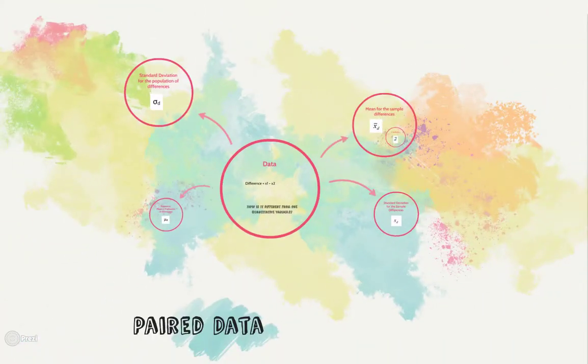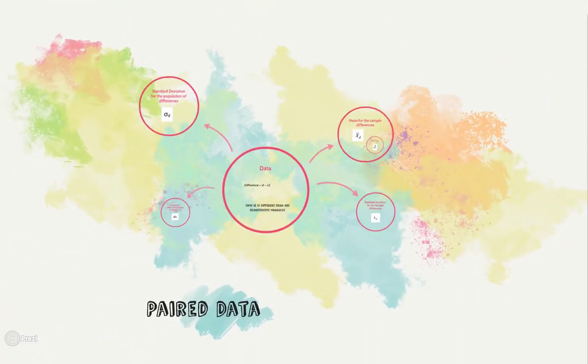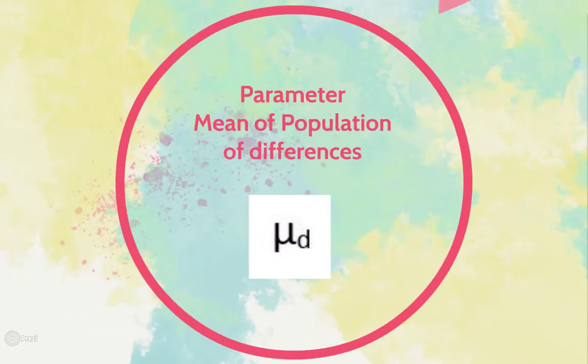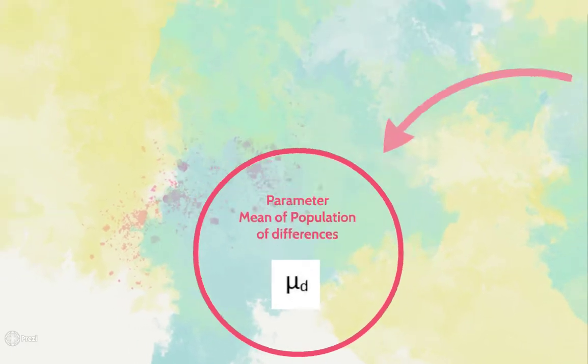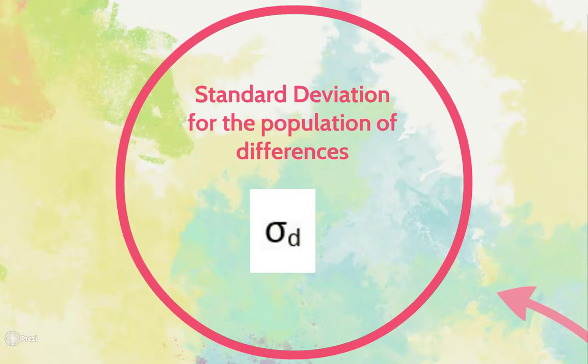When we look at notation for a population parameter, we have mu, but now because it's in the context of differences, we add the subscript d. Our parameter of interest is mu sub d, which is the mean of the population of differences. Similarly, our parameter for standard deviation is sigma sub d. We had sigma in the past, but now because it's in the context of differences, we add the subscript d.